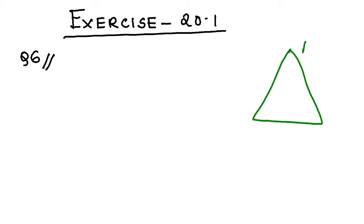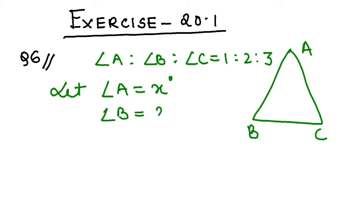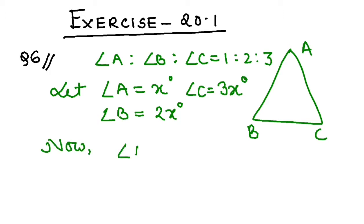So there is a triangle ABC and the angles of the triangle are in the ratio 1:2:3. You have to find the angles. What I'll do is assume that angle A is x degrees, angle B is 2x degrees, and angle C is 3x degrees.